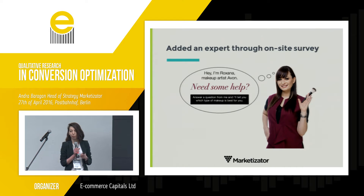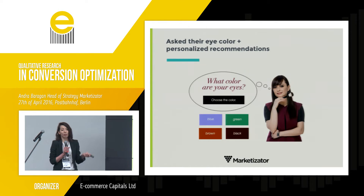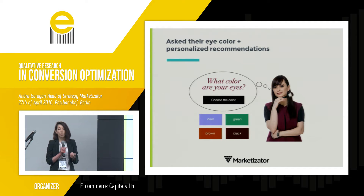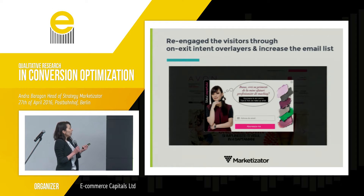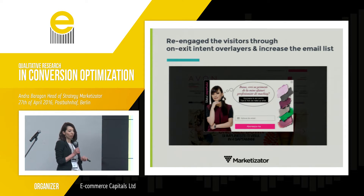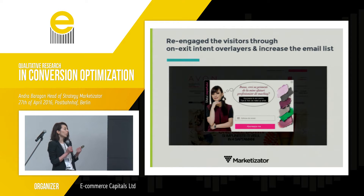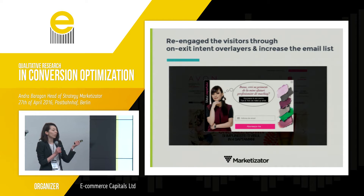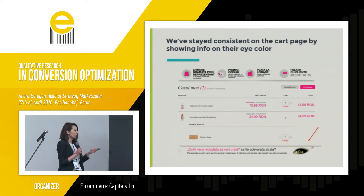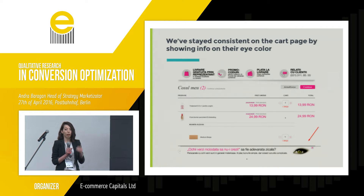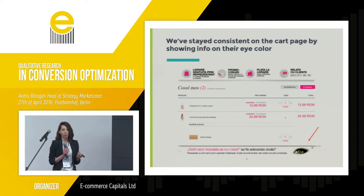After visitors would engage with Roxana, she would ask what color their eyes are — they would select blue, green, brown, or black — and visitors would get recommended product personalizations. To re-engage those who didn't engage with Roxana at the first step, we also had an on-exit intent overlay that would bring them back to the site and increase the email list. Roxana would say, 'Do you want to receive some professional makeup tips? Give me your email address.' To stay consistent, we kept Roxana on the cart page — based on the product and eye color category added to cart, we would add relevant information that confirmed they made the right choice.